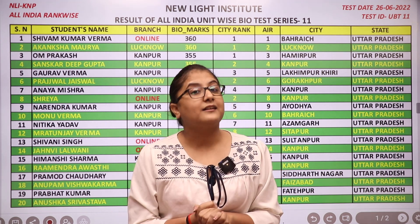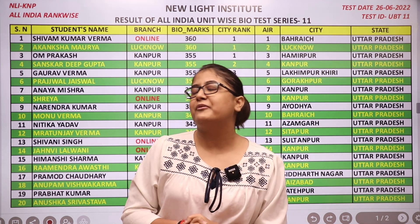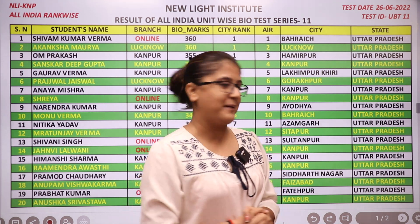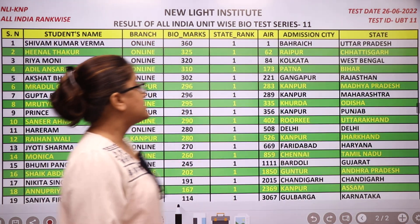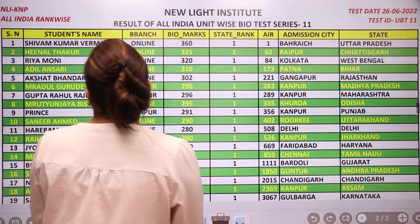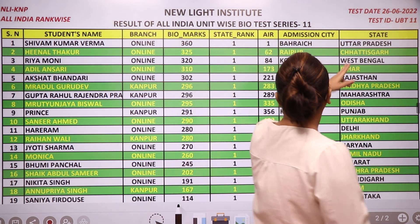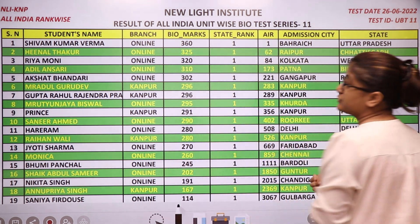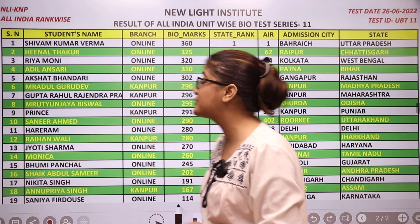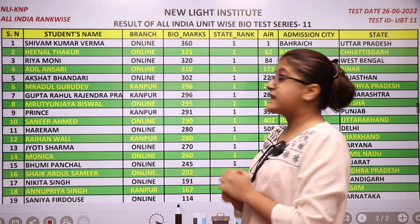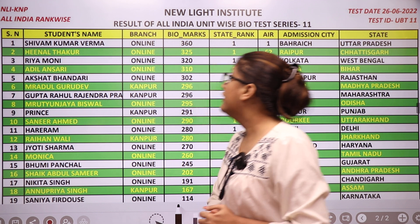Now talking of the other remaining 18 states, let's see who are the top performers from them. AIR 1 is already taken by Uttar Pradesh and the student's name is Shivam Kumar Verma — a big congratulations to you. Talking of other states: from Chhattisgarh, we have the topper Heenal Thakur.